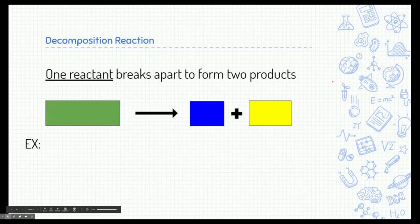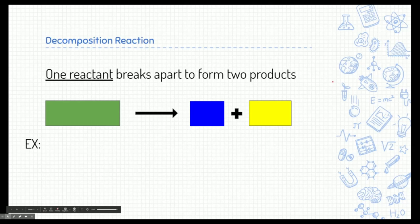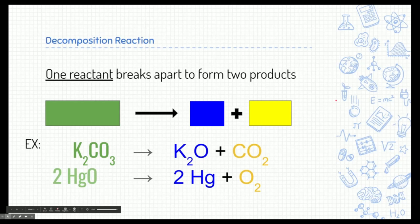The opposite of a synthesis reaction is called a decomposition reaction. One reactant breaks apart to form two products. I emphasize the term one reactant. That's kind of a key indicator to let you know a decomposition reaction is taking place. So here we have potassium carbonate. There's nothing it's reacting with. So the only thing it can really do is break apart into multiple pieces. So potassium carbonate breaks apart into potassium oxide and carbon dioxide. You can say the same thing about mercury two oxide. So mercury two oxide breaks apart into mercury and oxygen.